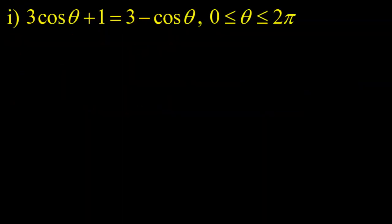So in our first case, we've got 3cos(θ) + 1 = 3 - cos(θ), and we need to provide the solutions, or the roots, of this equation on the domain 0 to 2π. The first thing to note is that this is a first-degree trig equation, in that when you look at the trig terms, cos(θ) on the left and cos(θ) on the right, they're not squared or cubed or anything like that. If they were squared, they'd be called second-degree trig equations.